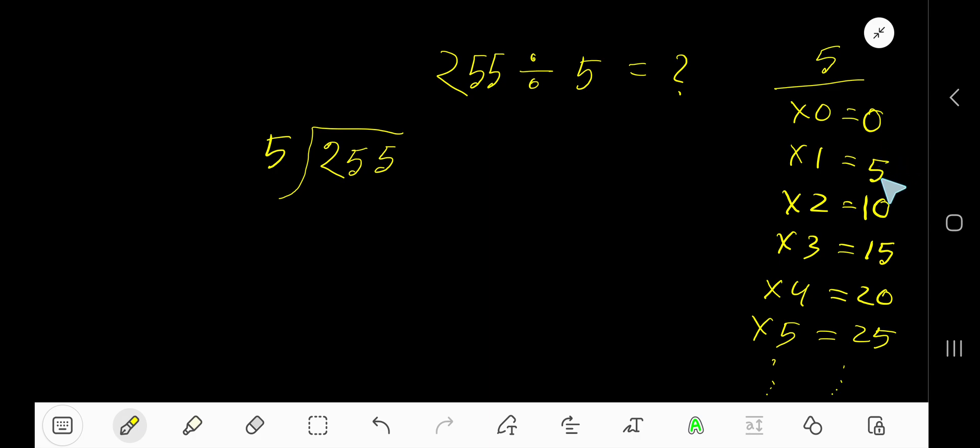To find out the multiplication table of 5, just start with 0 plus 5 equals 5, 5 plus 5 is 10, 10 plus 5 is 15, 15 plus 5 is 20.